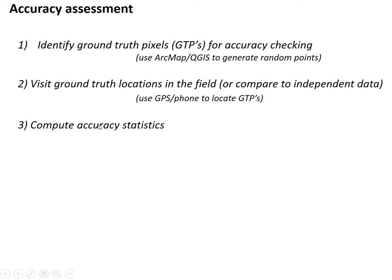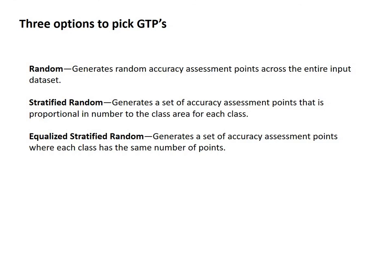The final step is to compute accuracy statistics once you know which pixels are correct and which are wrong. There are three basic options to pick the ground truth points. One is to randomly pick them — if you randomly pick them across the entire map, you tend to end up with more ground truth points in your larger classes. Another choice is stratified random, which makes sure you generate them in proportion to the area of each class, so bigger classes would have more ground truth points. And then finally, equalized stratified random, where you generate them so that each class has the same number of points — that's what we'll do in our lab.